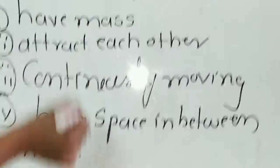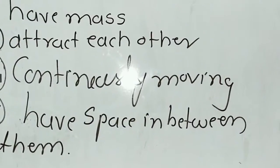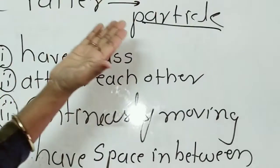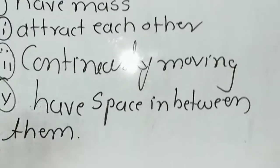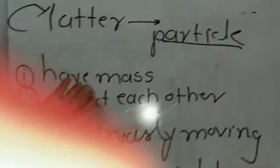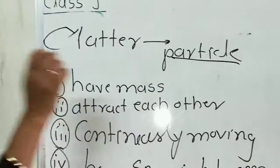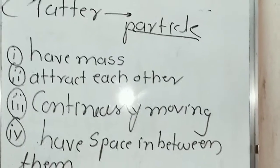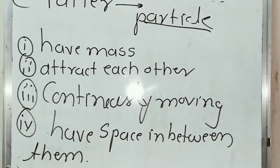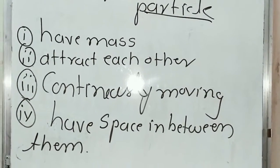All these are the characteristics of the particle. Particles have mass — the definition of matter says matter has mass, so obviously particles also have mass. Second: these particles attract each other. Third: particles are continuously moving. Fourth: particles have a space in between them. We will study these with the help of an activity.